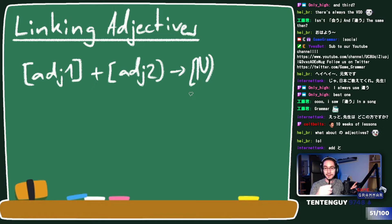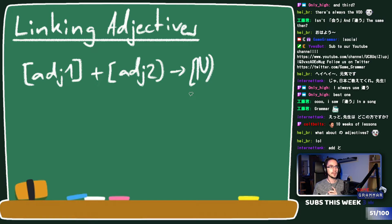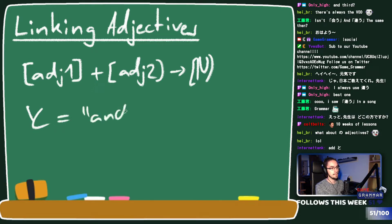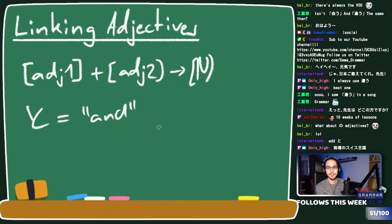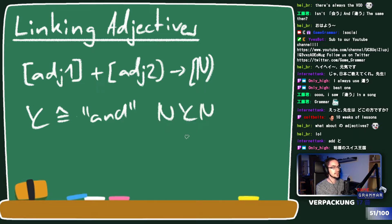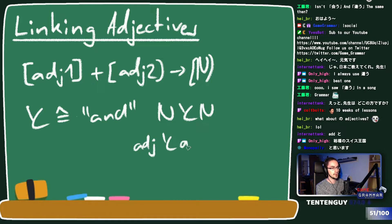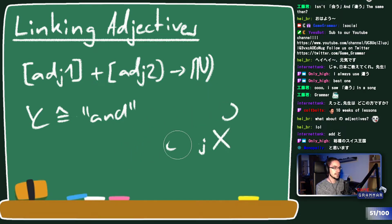The first impulse might be to use 'to' because many people are taught that 'to' means 'and.' But it's sadly not as easy as that because 'to' is only 'and' when it's between nouns - noun to noun works, but adjective to adjective is wrong. You can't do that.